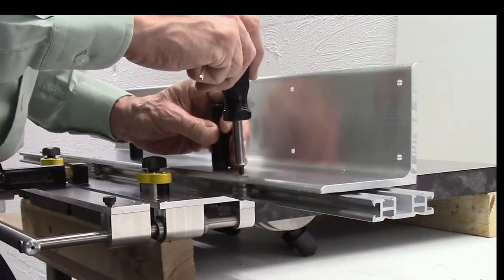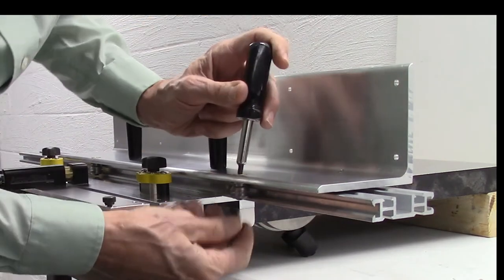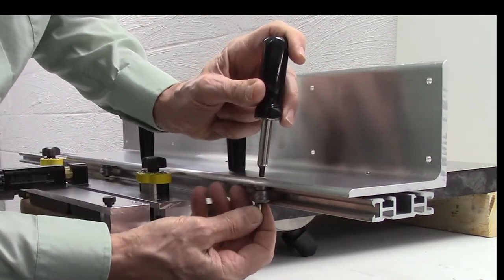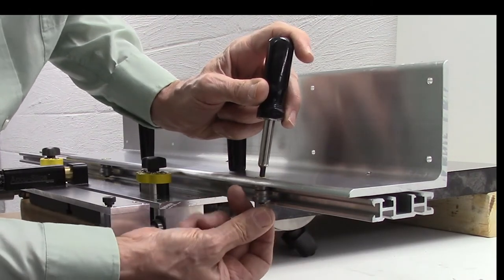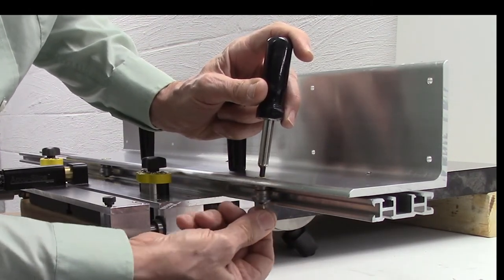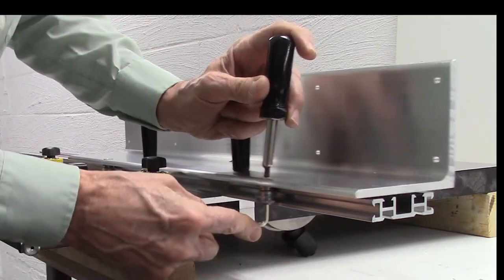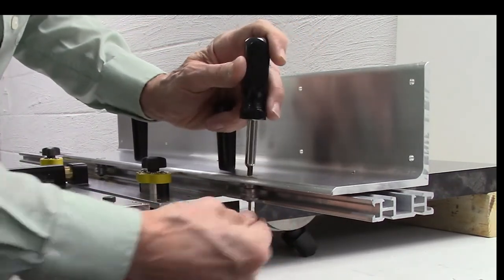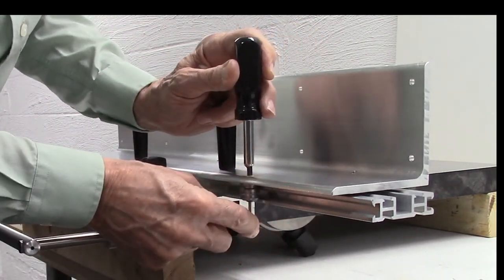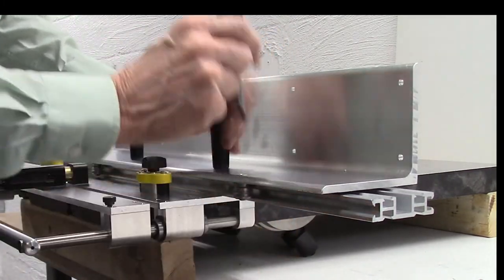So again, I turn this offset cam until I start getting some resistance, and then tighten the bottom Allen screw. And again, I have a little too much tension there. I want to loosen it a hair, turn this a hair, retighten it, and now I have pretty good tension.